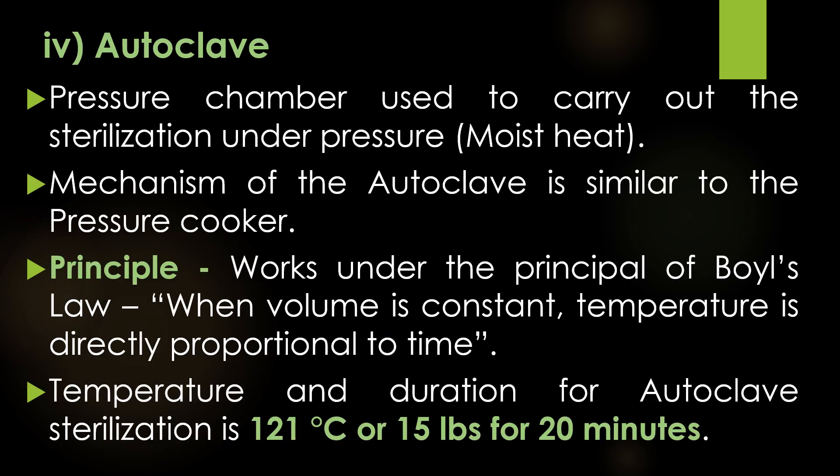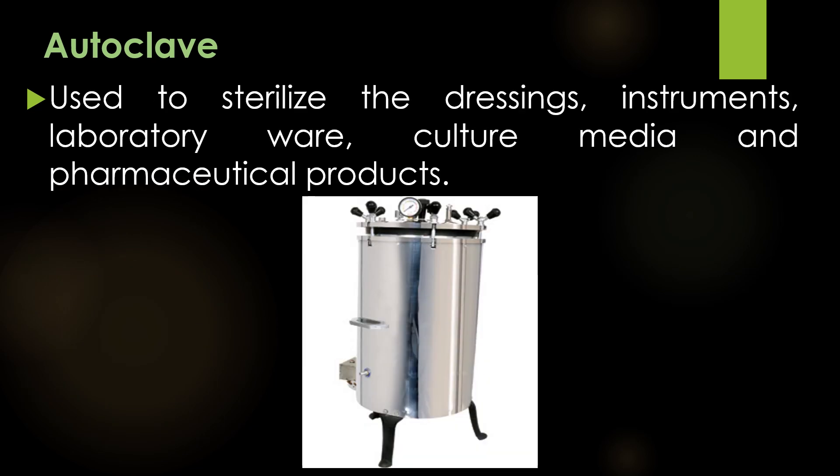The fourth method of moist heat sterilization is autoclave sterilization. An autoclave is a pressure chamber used to carry out sterilization under pressure using moist heat. The mechanism of autoclave sterilization is similar to a pressure cooker, and the autoclave works under the principle of Boyle's law — when volume is constant, temperature is directly proportional to pressure. The temperature and duration for autoclave sterilization is 121 degrees Celsius, or 15 lbs pressure, for 20 minutes. The autoclave is used to sterilize dressings, instruments, laboratory ware, culture media, and pharmaceutical products. This is the image of the autoclave used for moist heat sterilization.